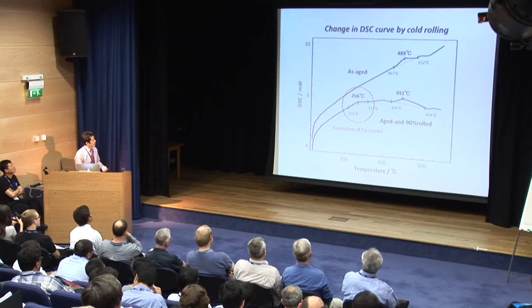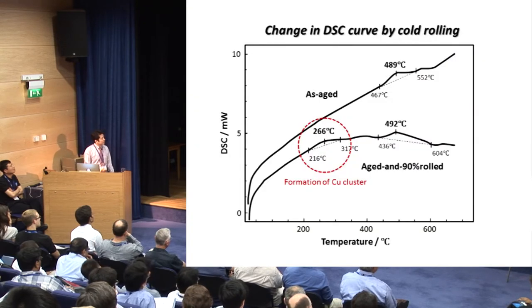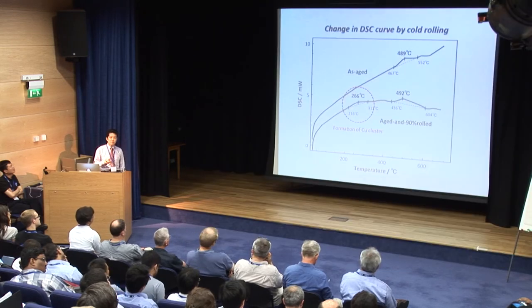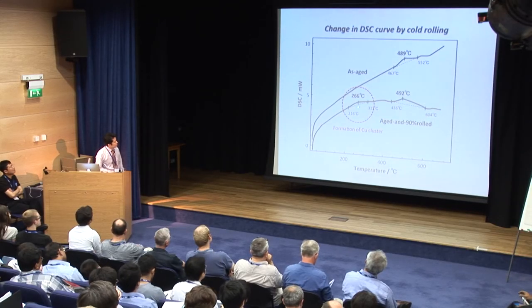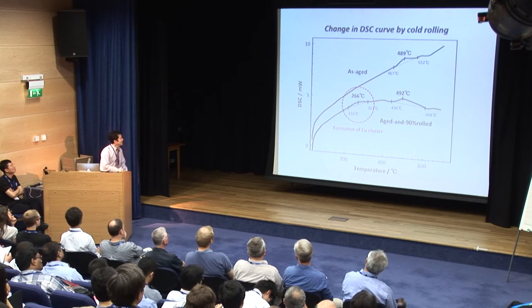We attempted to detect re-precipitation of kappa by DSC analysis. In both the as-aged material and the aged and 90% cold-rolled material, we can clearly see a high-temperature peak at around 490°C, corresponding to growth of epsilon copper or transformation from 9R to FCC. But the low-temperature peak at 266°C is visible only in the cold-rolled material, which is believed to be formation of copper clusters. This means precipitation occurs only in the cold-rolled material — in other words, dissolution of kappa occurred by 90% cold rolling.